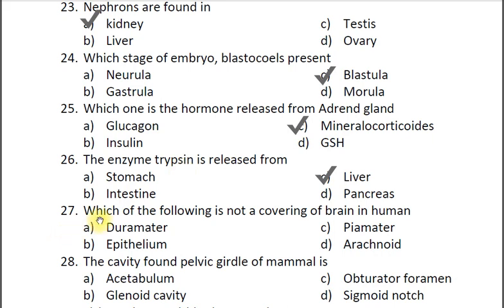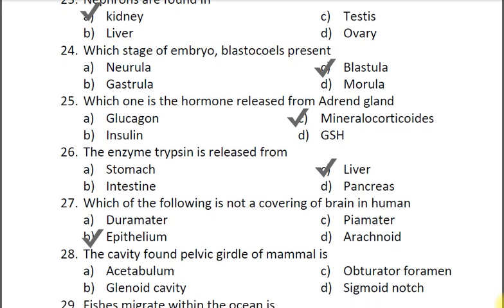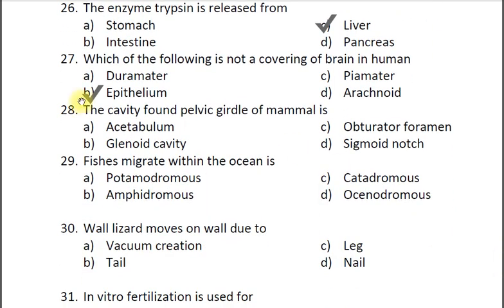Question twenty-seven: Which of the following is not a covering of the brain in humans? A dura mater, B epithelium, C pia mater, D arachnoid. The correct answer is B epithelium. All the others are coverings of the brain.